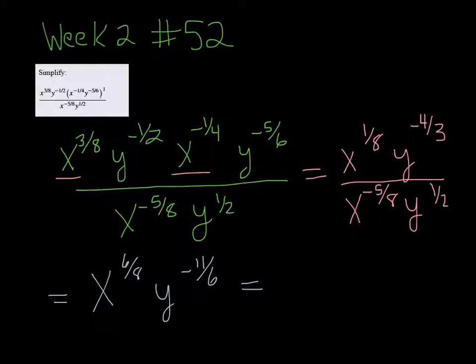All right, so 6 eighths is the same as 3 fourths. And the negative 11 sixth exponent tells me that the y to the 11 sixths belongs in the bottom. Because generally you don't want to have any negative exponents. So this is what you want to put in.